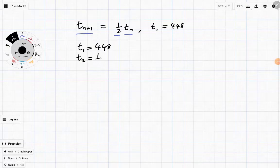So if the current term is 448, it's going to be 448. And the next term is going to be a half times 448. Now multiplying by a half is the same as dividing by 2, so it's 224. t_3 is going to be a half again, times 224, 112.